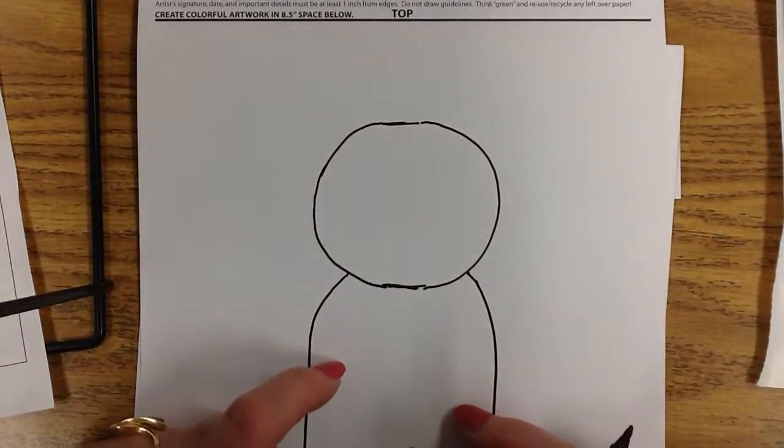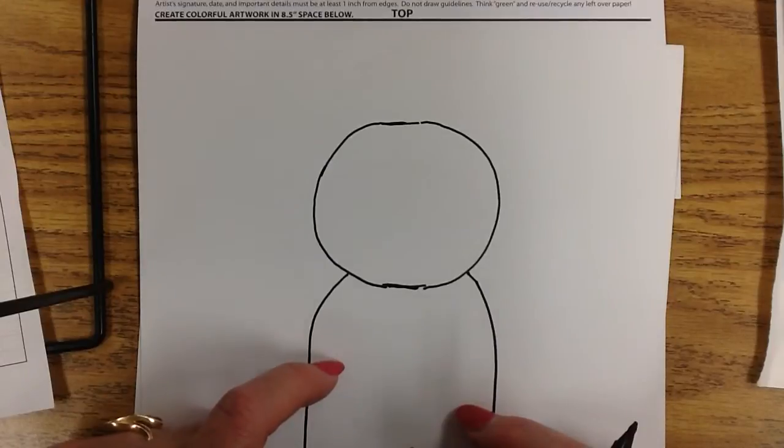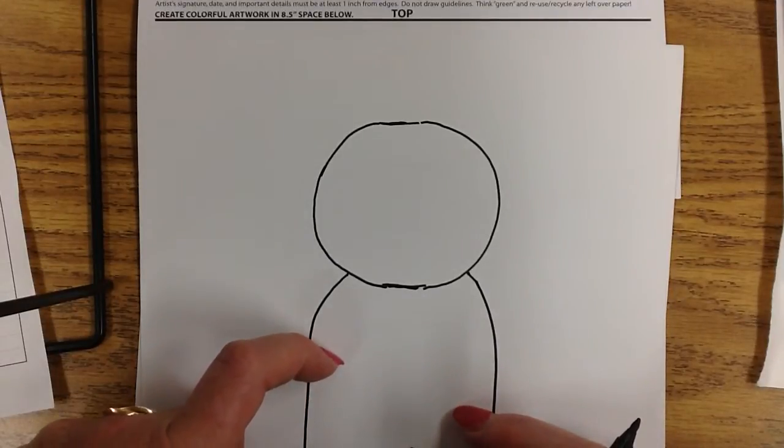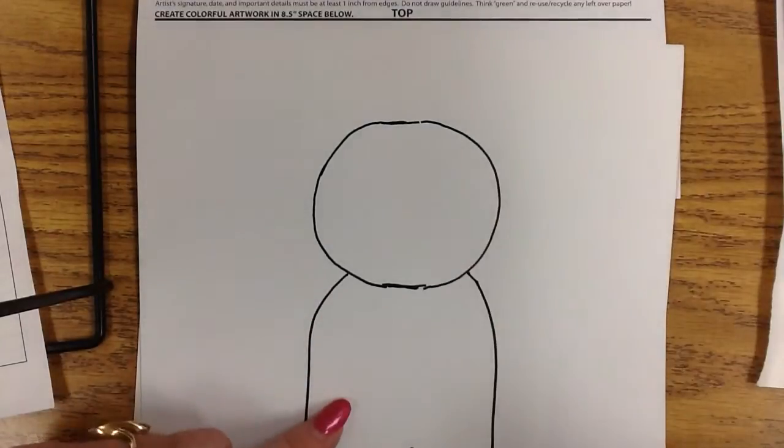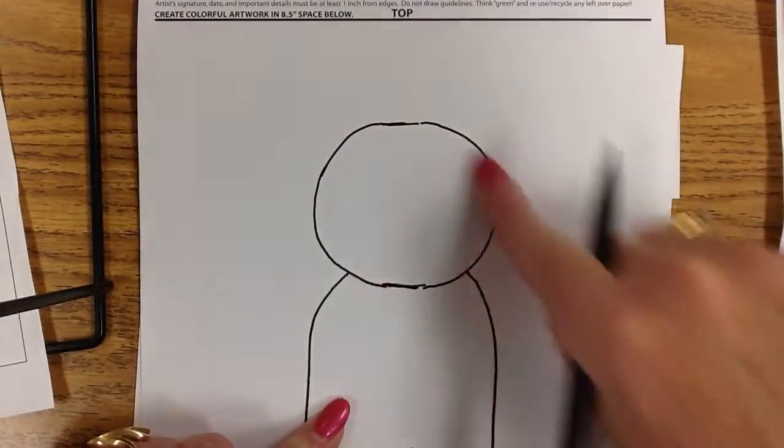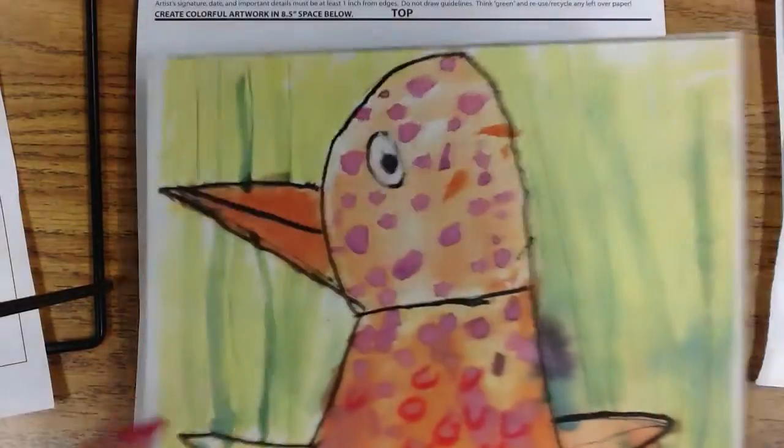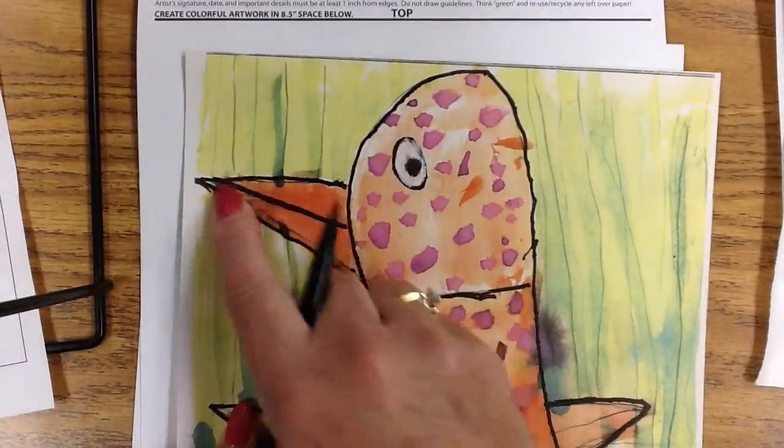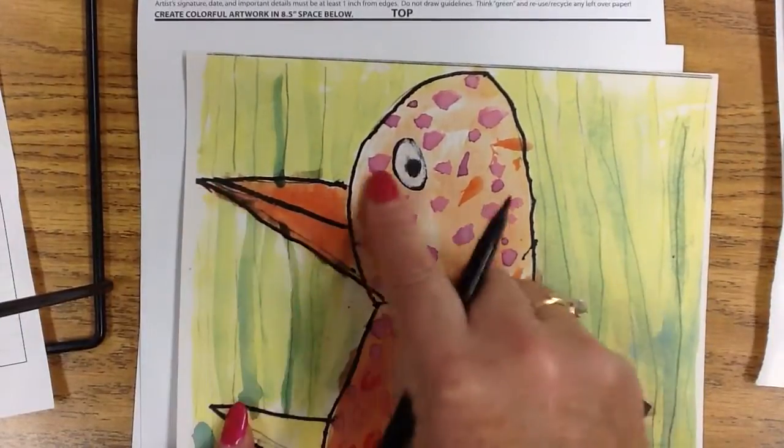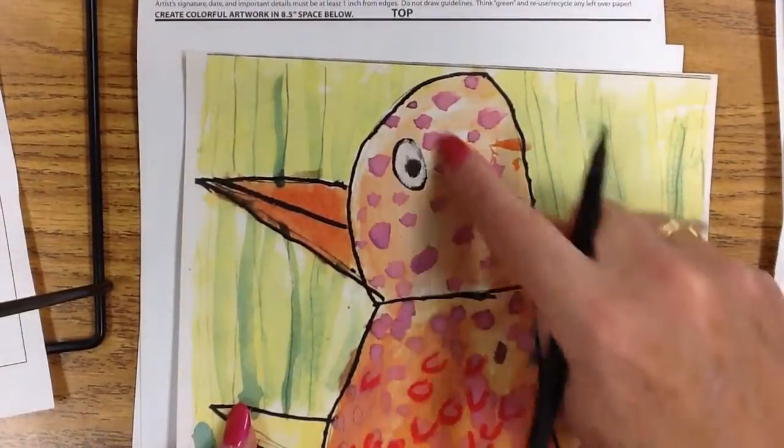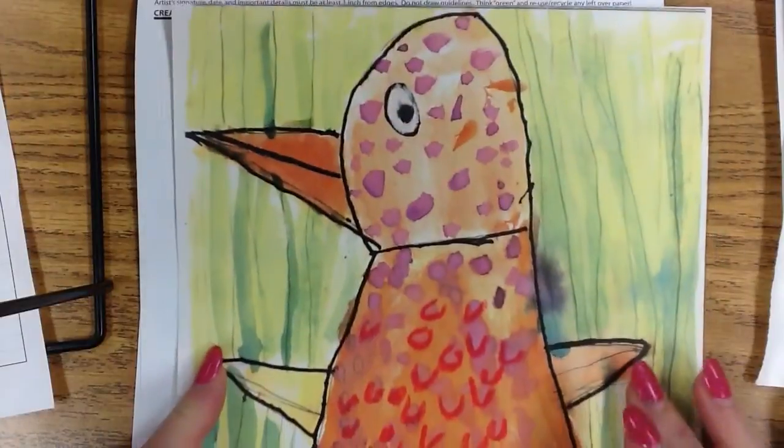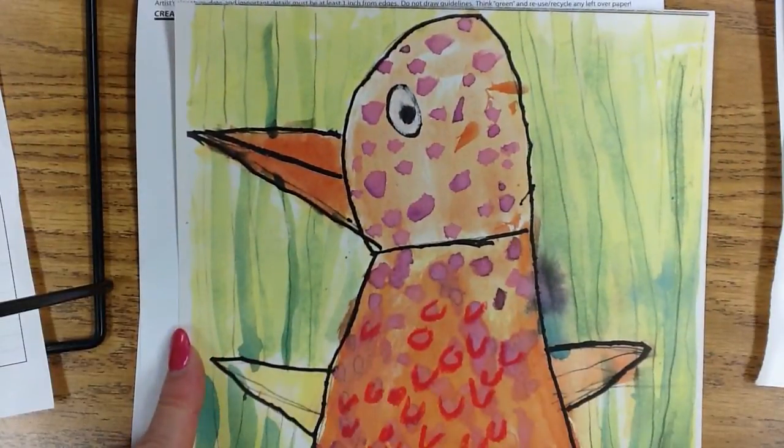And now we're going to start thinking of what can it be? What can it be? What can I turn this circle and body into? If I add a straight line out and connect with some cool big giant eyes and some wings, it could be a bird.